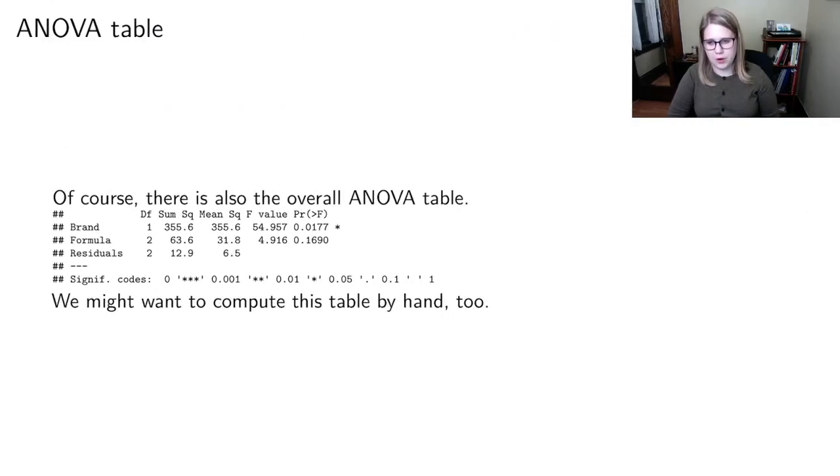And then there's also the overall ANOVA table, so this gets a little bit more complicated. Now we have a row for brand and a row for formula and we have p-values for each of them.